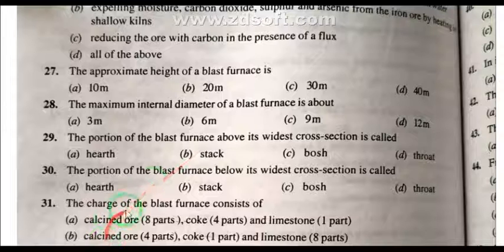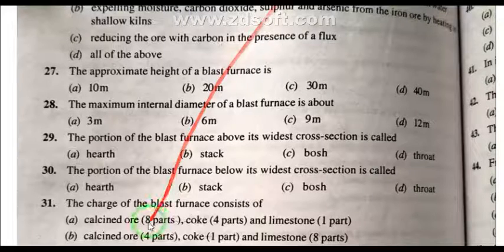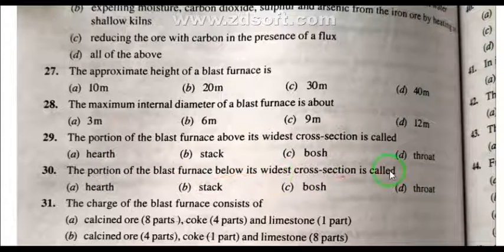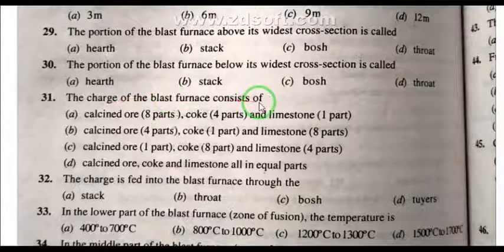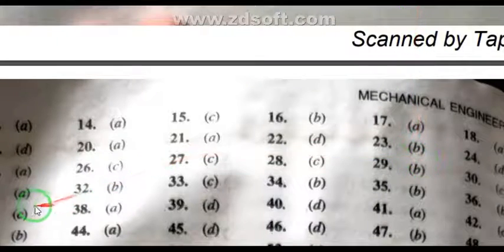Question 30: The portion of the blast furnace below its widest cross-section is called the bosh. Question 31: The charge of the blast furnace consists of calcinate 8 parts, coke 4 parts, and limestone 1 part.